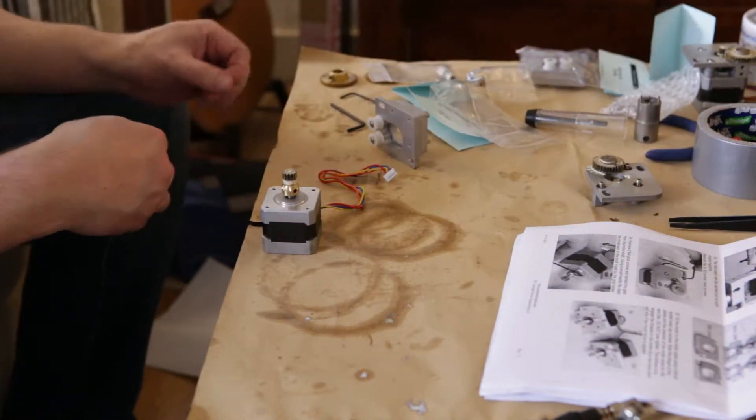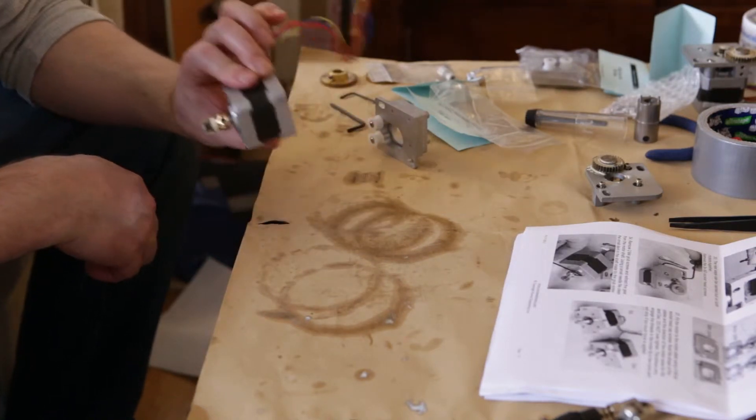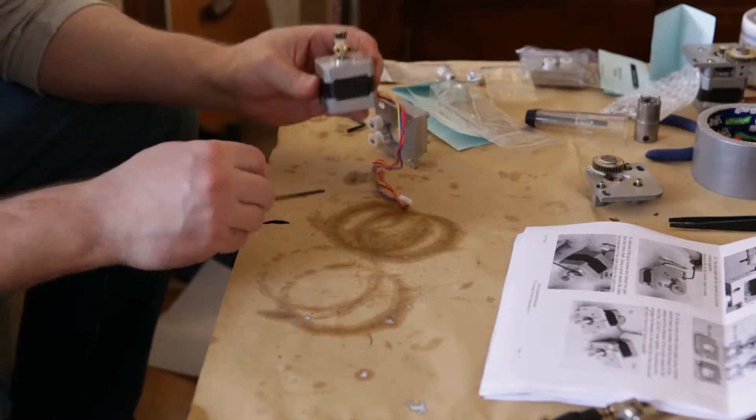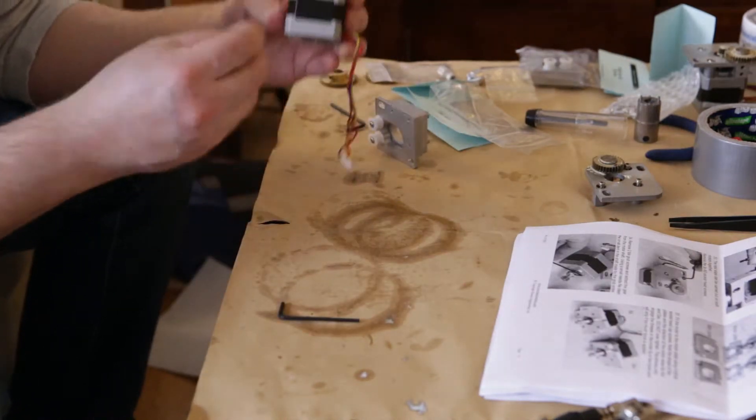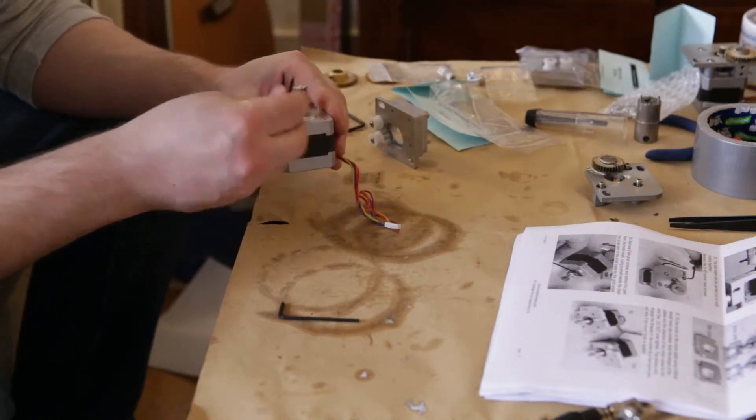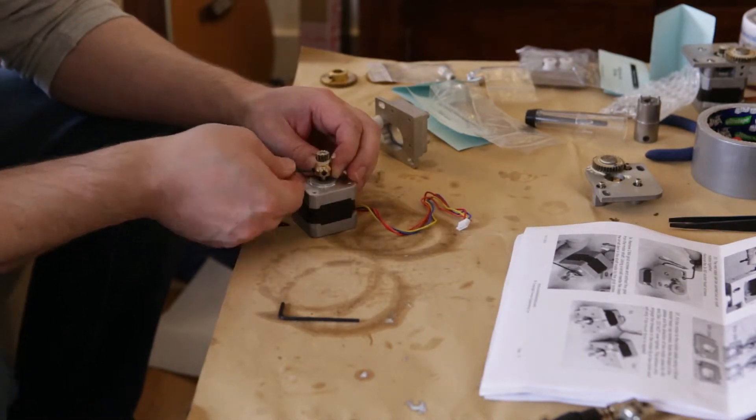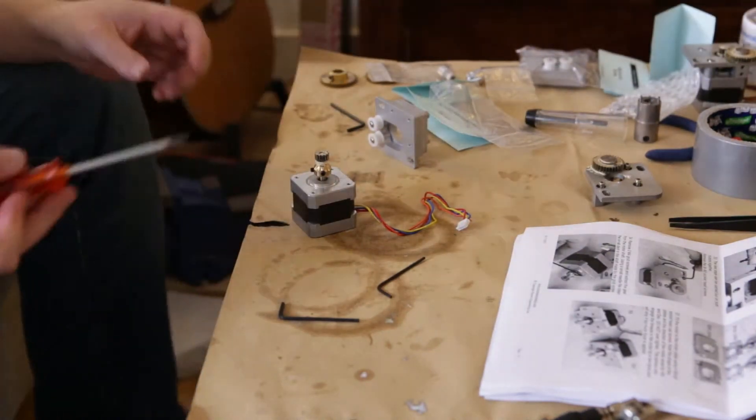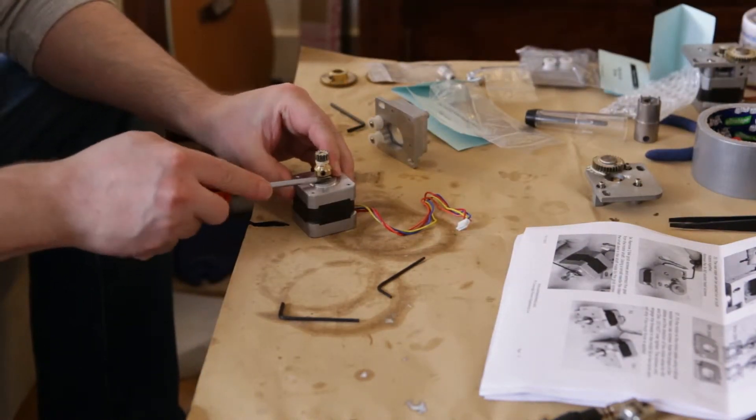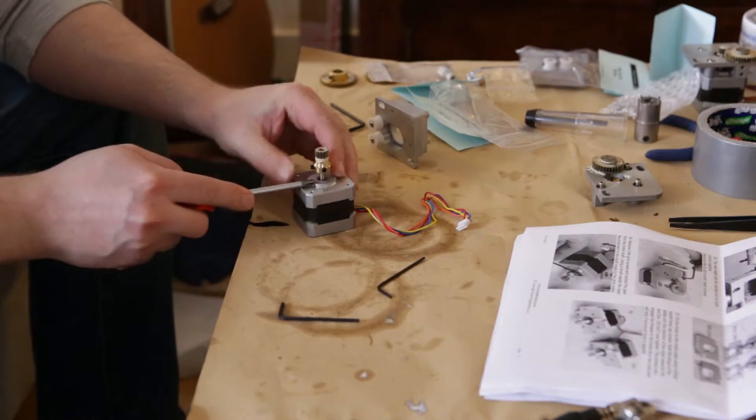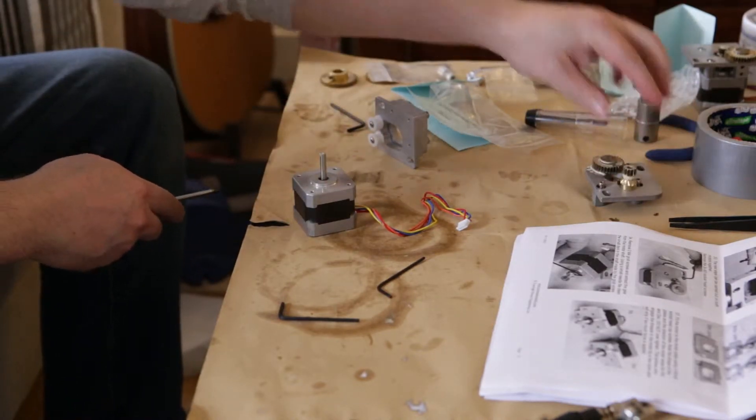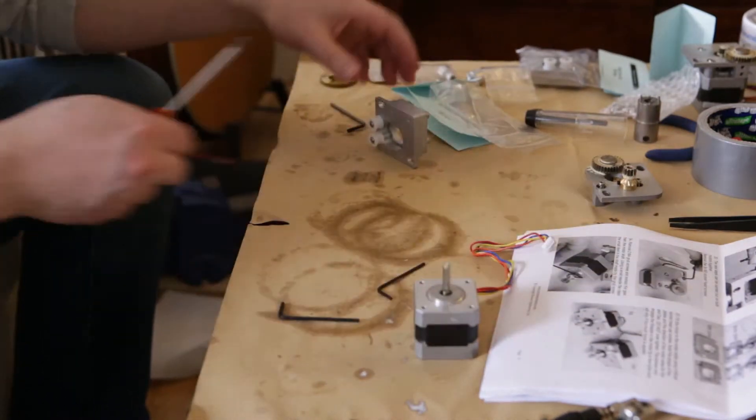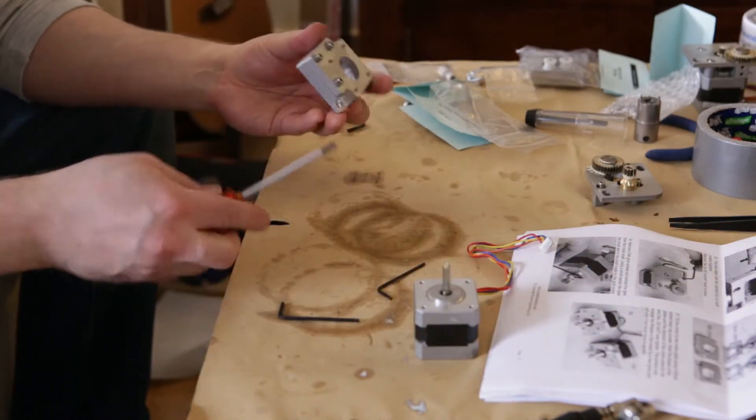And then we need to take off the pinion, which is held by these two grub screws here. Let's loosen them up. There we go, so that's the pinion out, and then we need to separate these plates from each other.